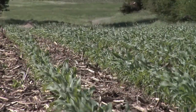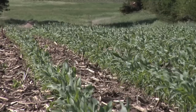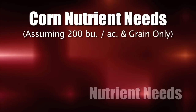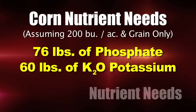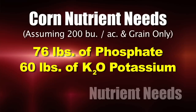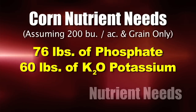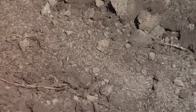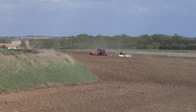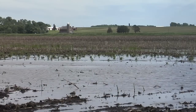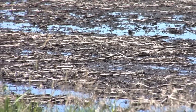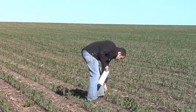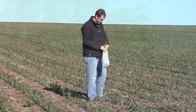Where we want to start is looking at how many nutrients your crop is going to use overall. When talking about a corn plant, just to produce the grain only — not even counting the stover — if you're going to raise a 200-bushel crop you've got to have 76 pounds of phosphorus and 60 pounds of K2O potassium. That's a lot of nutrients and very few farmers in the country are fertilizing at least that much. If you've got soil problems like pH out of whack, flooding, or other issues, even the fertilizer you do have in the soil might not get into the plant. So it's very important throughout the growing season to do plant tissue analysis.